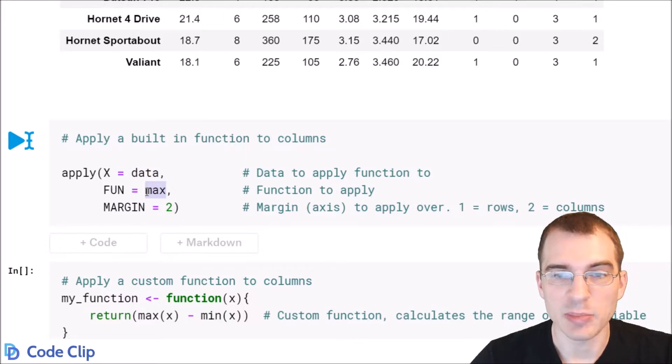In this case we're passing in max which is a built-in function to calculate the maximum of each column. And for the margin argument you're passing in the axis that you want to apply over. So that just means do you want rows or columns?